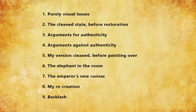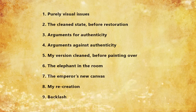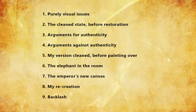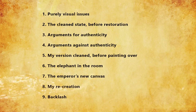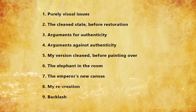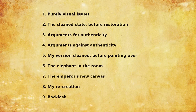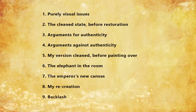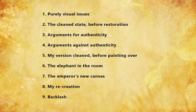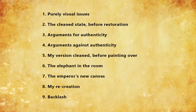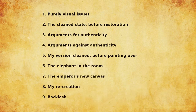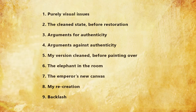In the remainder of the video, I will discuss the purely visual issues with the painting — the clean state, after overpainting had been removed and before any more changes or alterations. Then the arguments for and against authenticity, my version of the clean state before I digitally painted over it, then the elephant in the room — the truth they don't want you to know — then the emperor's new canvas, my final recreation, and finally the backlash people have received for speaking out.